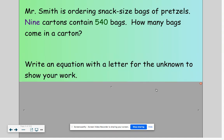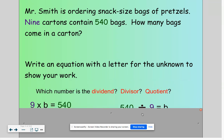First we want to write an equation with a letter for the unknown to show our work. So we can either say nine times bags equals 540, or 540 divided by the nine cartons would give us B for bags.